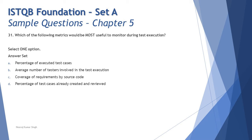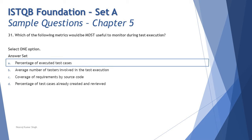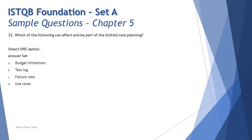Putting it all together, the right answer is A — percentage of executed test cases — which is the primary measure during execution. The question asks which is most useful, so we opted for A over B because B is more of a people metric, not an exact measurement for execution tracking.